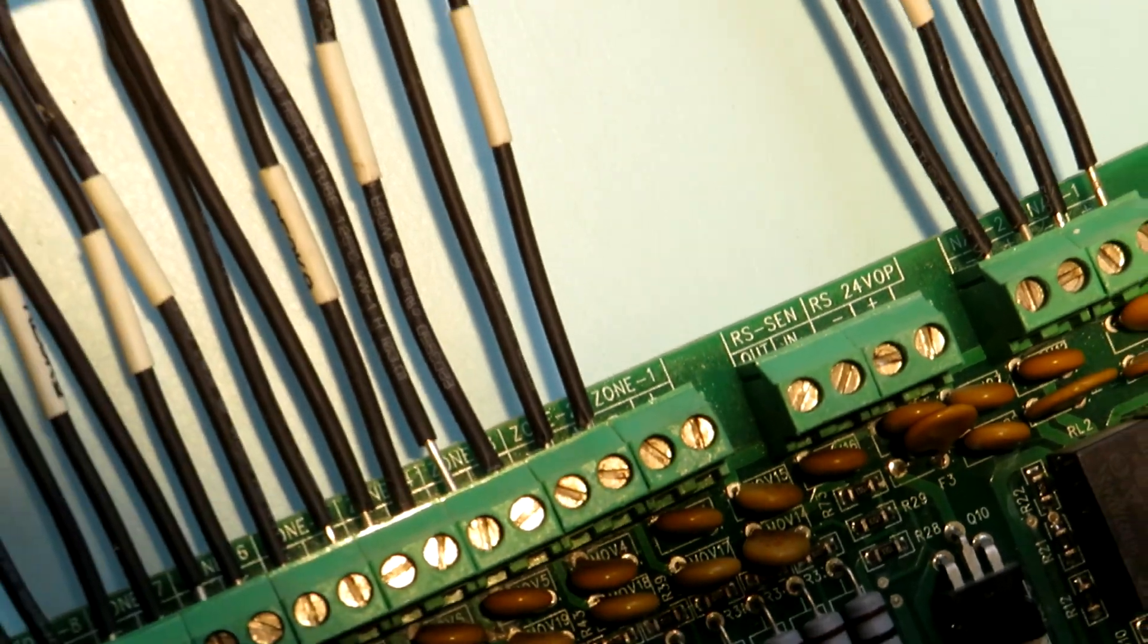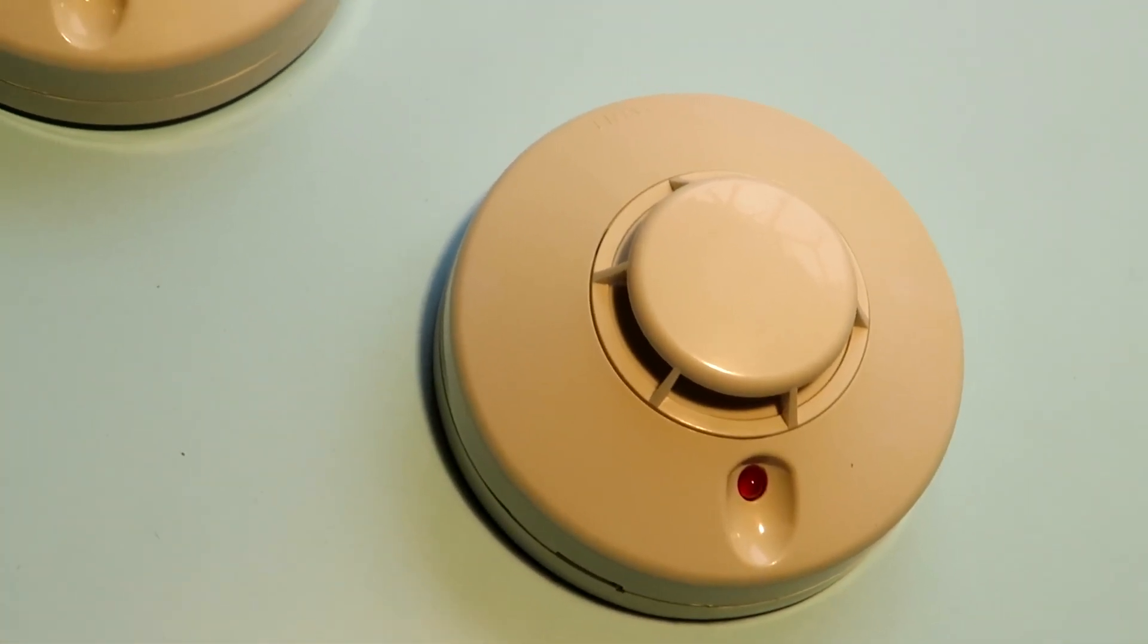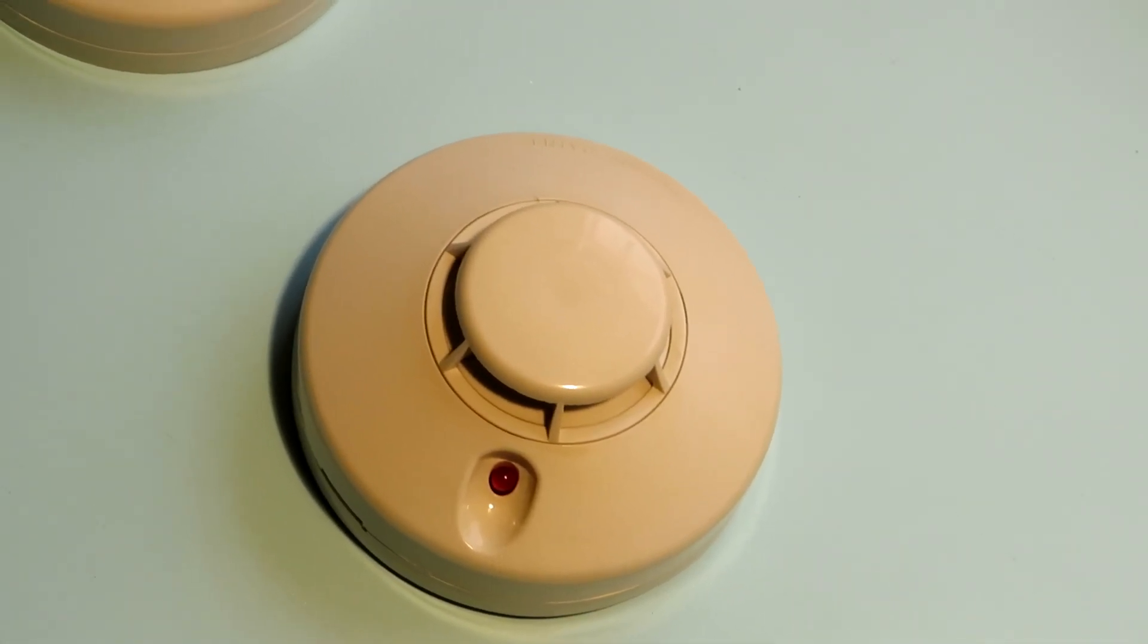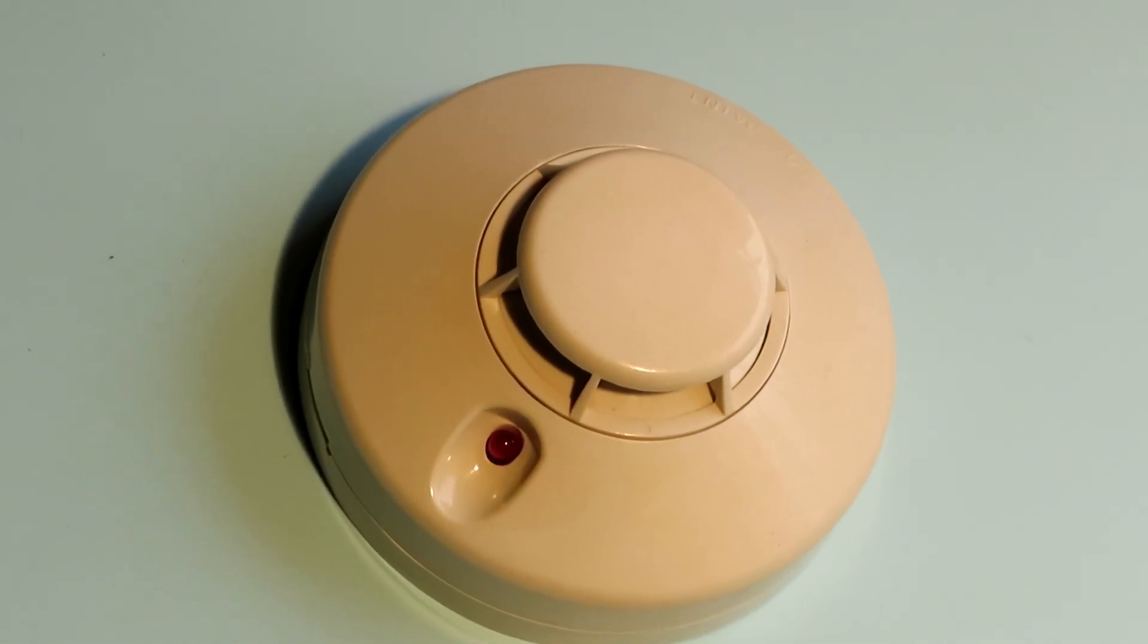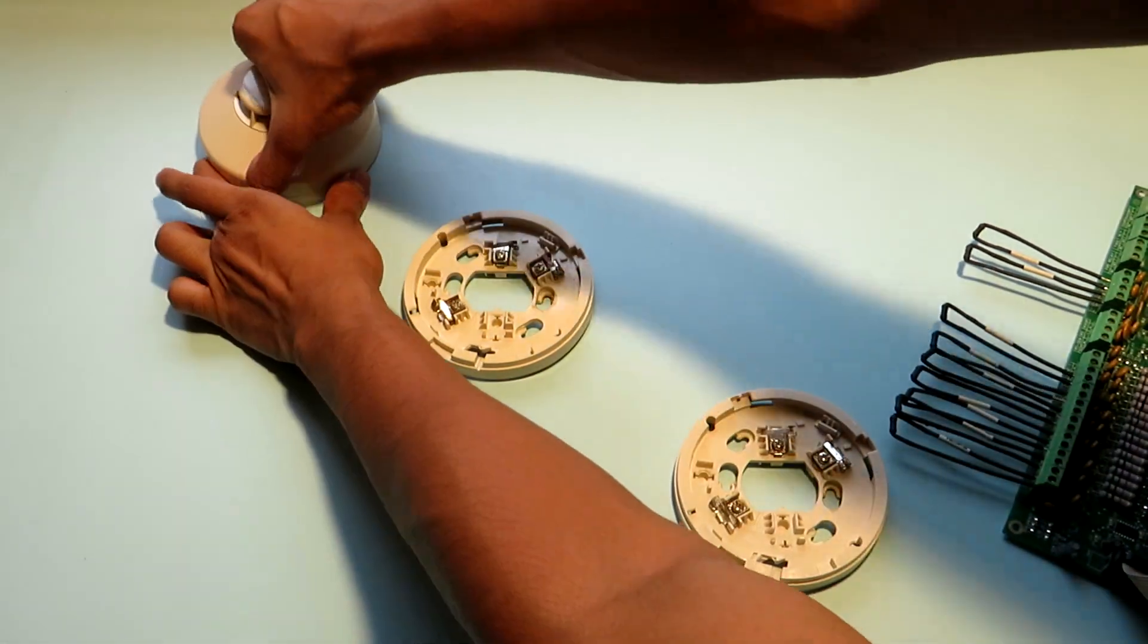You can see here our cables will first come from the panel and enter the first detector then get looped as per the schematics to the second detector which will further get looped to the third detector and the EOL resistor will be installed in the third detector. Now I'll detach the smoke detectors from the base units so that we can make our connection.